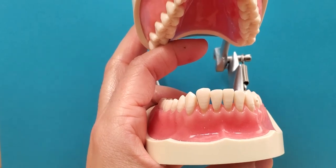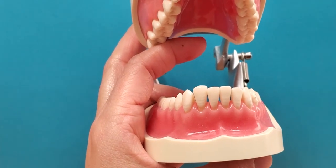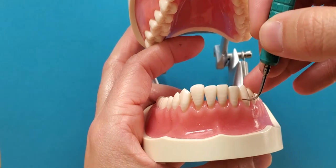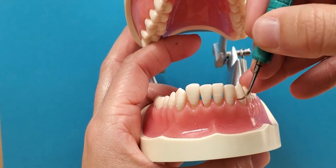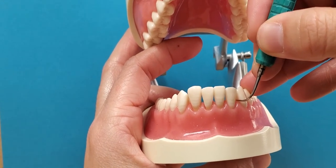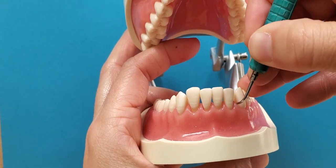You can also use curette style instrumentation with ultrasonic scalers. For curette style, you're going to position the instrument like you would a curette, and this can only be used for interproximals.